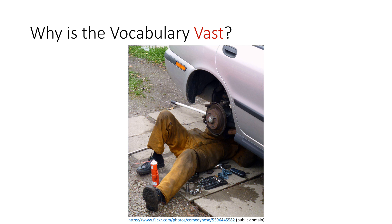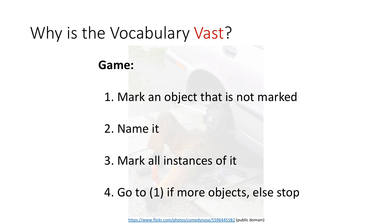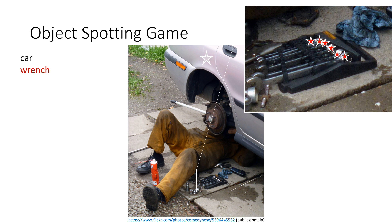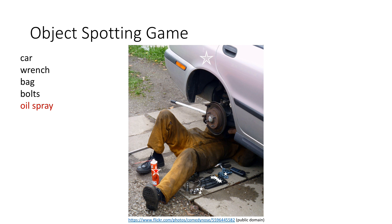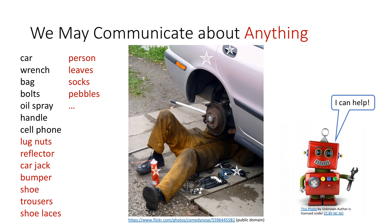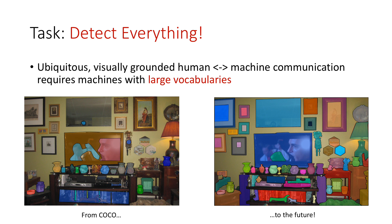To illustrate this point, we can consider this image in more detail. We'll play a simple game: first, we'll mark an object in the image that's not already marked, then we'll name it, and then we'll mark all the instances of it. If there are no more unmarked objects, we're done; otherwise we'll repeat. First, we see a car, because it's the largest, most salient object. Then a wrench — we mark all the instances of the wrench. Then we see a bag, some bolts, an oil spray can, a car door handle, a cell phone, and so on. There are many things in this image, and we might ask an autonomous system about any of them.